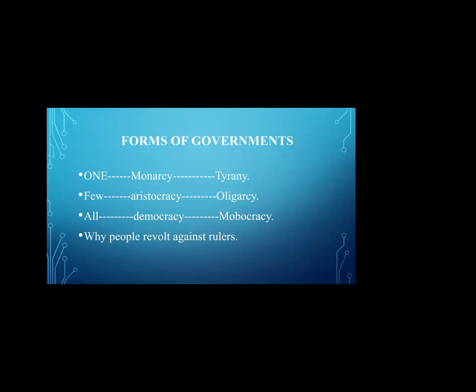The forms of government are three types basically. If a country is ruled by one person, we call it a monarchy. This monarchical form of government is a good form of government. But when good government transforms into a bad government, then only the people revolt against the existing government. Whether it is monarchy, aristocracy, or democracy, people revolt when the nature of government changes.